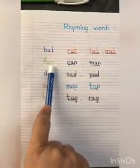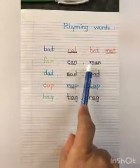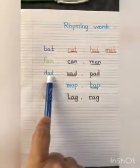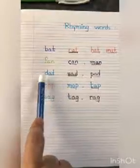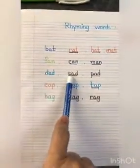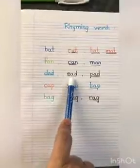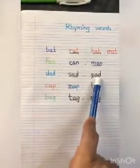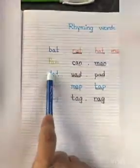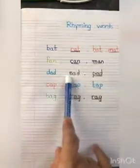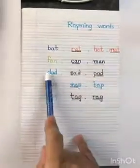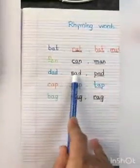Fan, can, man. Next, dad — what are the rhyming words of dad? Sad and pad. Dad, sad, pad.